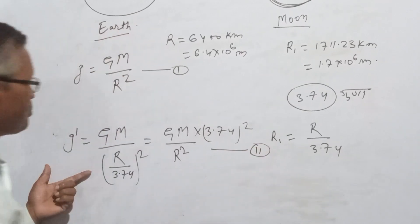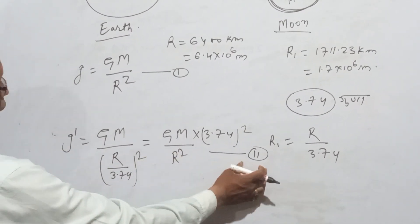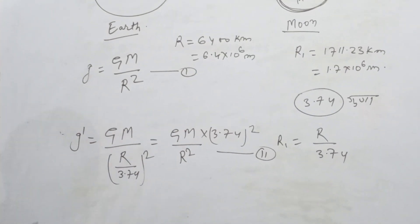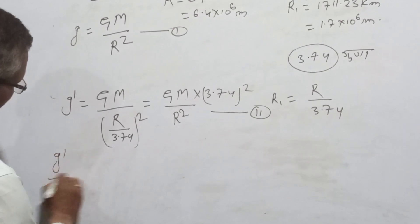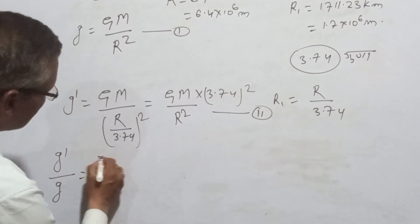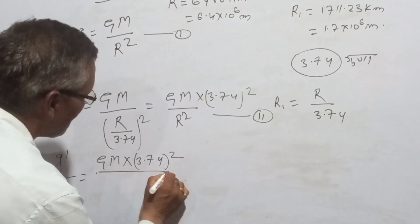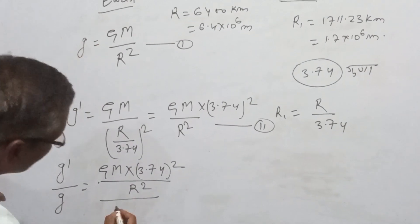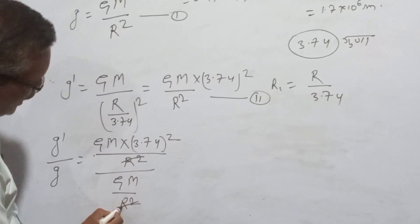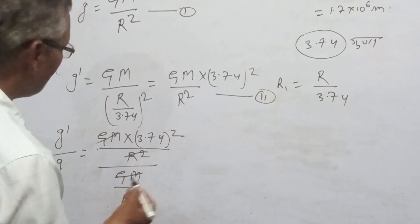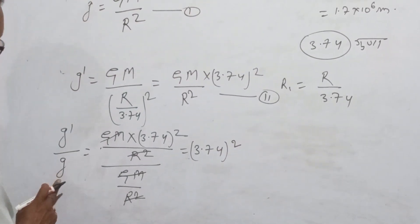We take the Moon's equation 2 and divide it by equation 1 from Earth. Dividing equation 2 by equation 1: g_dash divided by g equals GM into 3.74 squared divided by R squared. Looking at GM by R squared here, R squared cancels with GM — so we get 3.74 squared.